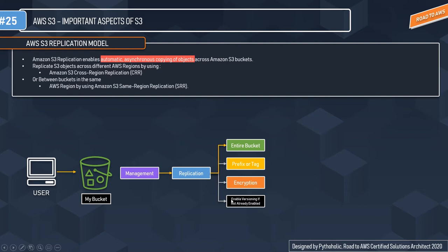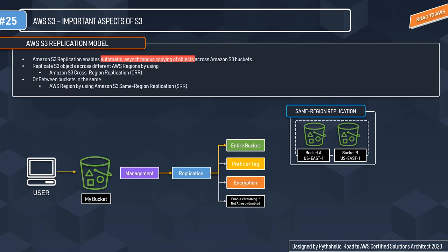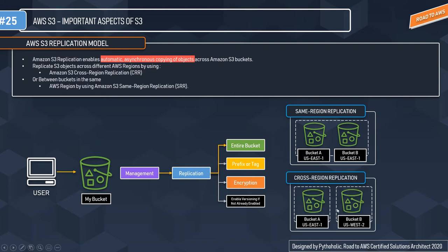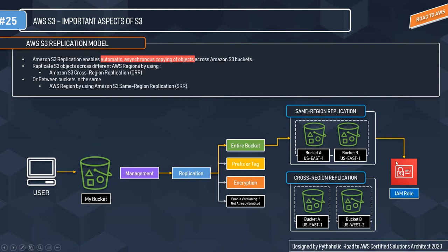The most important condition to remember is that you must enable versioning if it is not already enabled for the bucket. Once you have management policies and replication configured, you can choose same-region replication — for example, two buckets both in us-east-1 — or cross-region replication, where you have two different regions with a source bucket and a target bucket. Using the IAM role, S3 can assume and replicate objects on your behalf. This is a generic overview of how replication works.